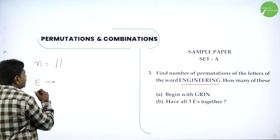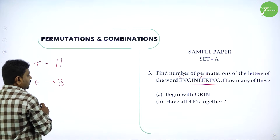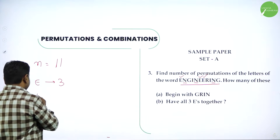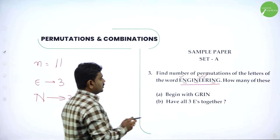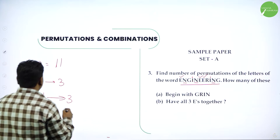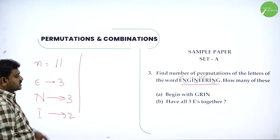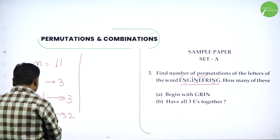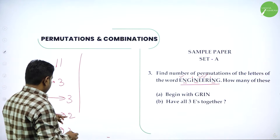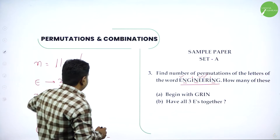We have 3 N's repeated, 2 I's repeated, and G is also repeated — 2 G's. R is the only letter not repeated. So in engineering: 11 total letters, with 3 E's, 3 N's, 2 I's, 2 G's, and 1 R. That is the full description of the letters.